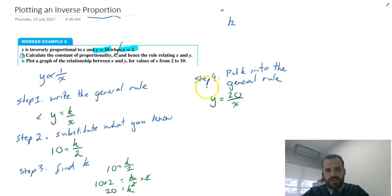So that's really the only thing we need to do here. The question we're answering is plot a graph of the relationship between x and y, the values of x from 2 to 10. Okay, so let's try that bit out.